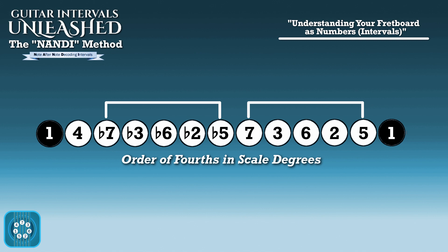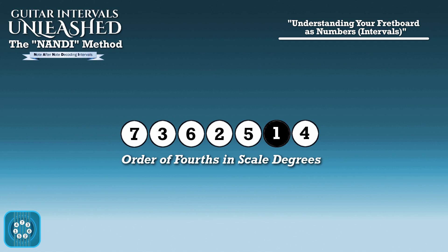This is an important reference point because if you know what scale degrees you want to get to, then you'll know how to find them. For example, a major scale has all the natural scale degrees — 1, 2, 3, 4, 5, 6, 7. So we know that you can arrange them in fourths and it would look like this: 7, 3, 6, 2, 5, 1, 4.